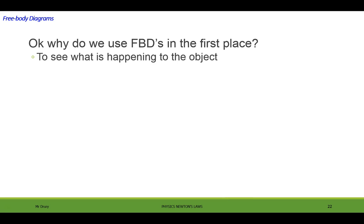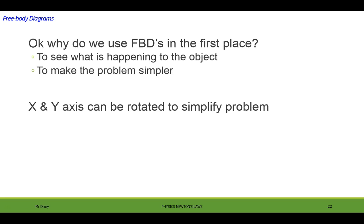Okay, so why do we use them in the first place? To see what's happening to the object and to make the problem simpler. And speaking of making problems simpler, we can actually take our normal x, y axes and rotate it to make a problem simpler. For example, let's say a box is on a ramp. Instead of having a horizontal x and a vertical y, we could take that whole axis and rotate it in the direction of the ramp, so that makes the problem simpler.